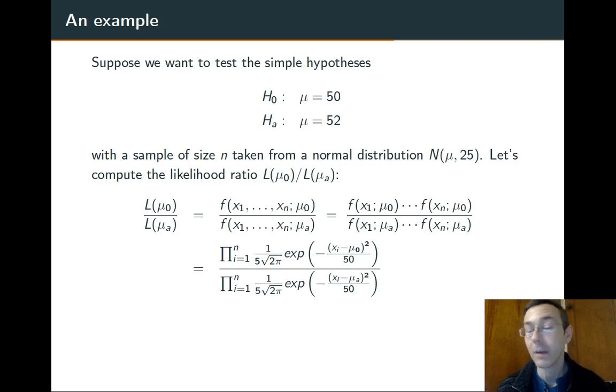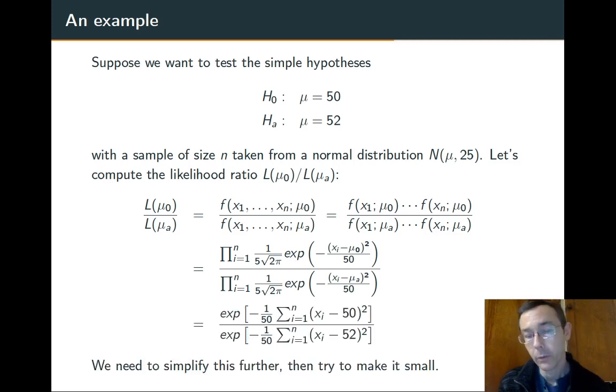There's lots of simplifications here right away. We see that there's the common factors of 1 over 5√(2π). There's n of those on the top, n of those on the bottom. They immediately cancel. We've also got products of exponentials. Those can be written as exponentials of sums.